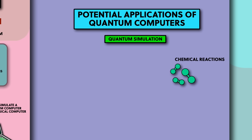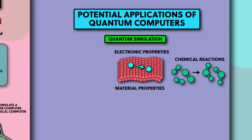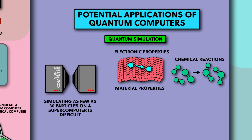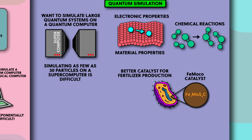Quantum simulation is simulating things like chemical reactions or how electrons behave in different materials with a computer. Here quantum computers also have an exponential speedup over classical computers because classical computers really struggle to simulate quantum systems. Simulating quantum systems with as few as 30 particles is difficult even on the world's most powerful supercomputers. We also can't do this on quantum computers yet, but as they mature a main goal is to be able to simulate larger and larger quantum systems. These include areas like the behaviour of exotic materials at low temperatures, like understanding what makes some materials superconduct, or studying important chemical reactions to improve their efficiency. One example aims to produce fertiliser in a way that emits way less carbon dioxide, as fertiliser production contributes to about 2% of global carbon emissions.